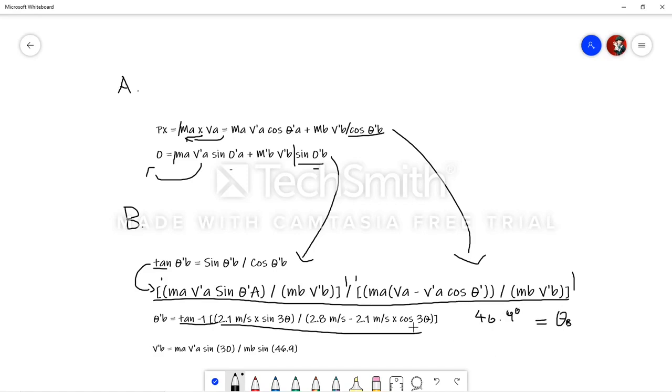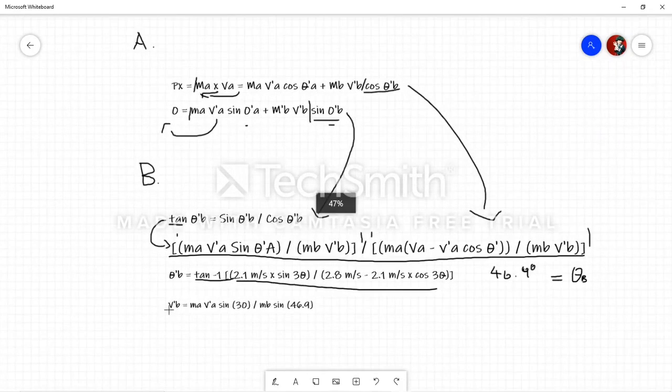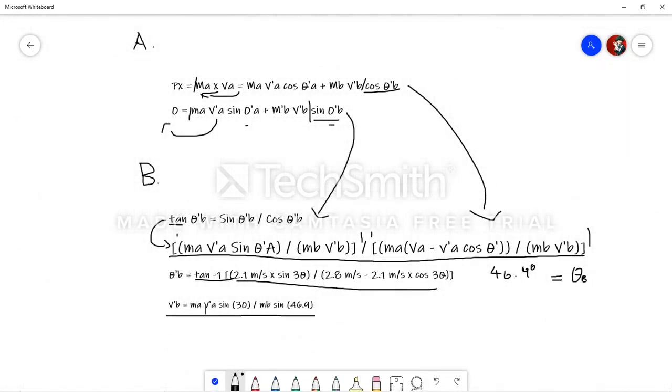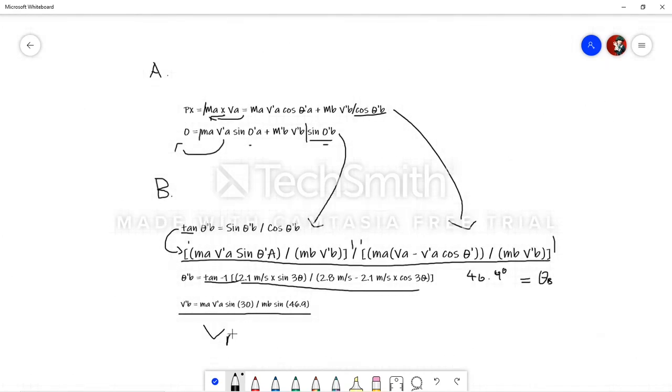Finally, since we have theta B, now we can just use VB. We can use VB equals to MA VA sine 30 over MB sine 46.9, which we just found. Now, doing all of this, we can find that VB is 1.23 meters per second.